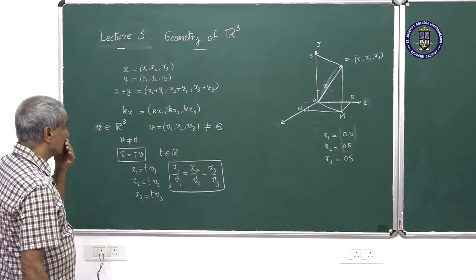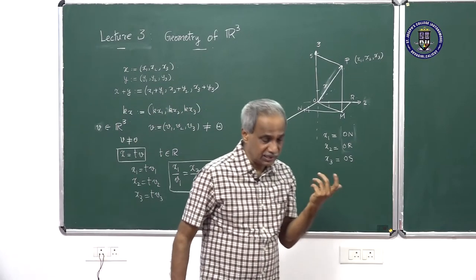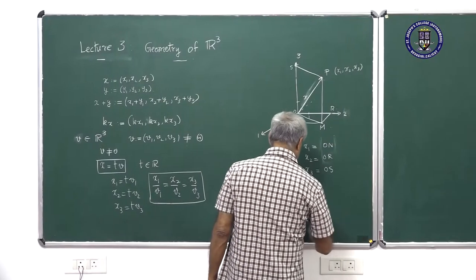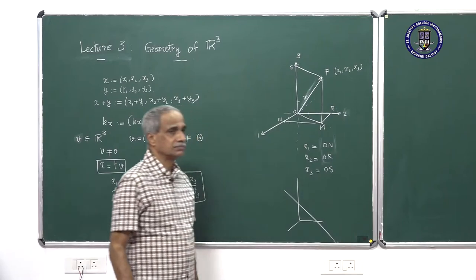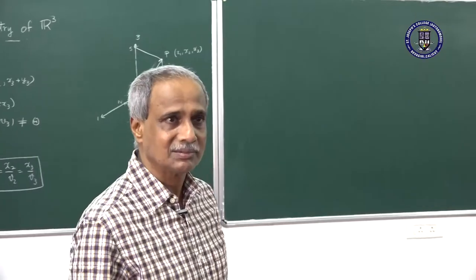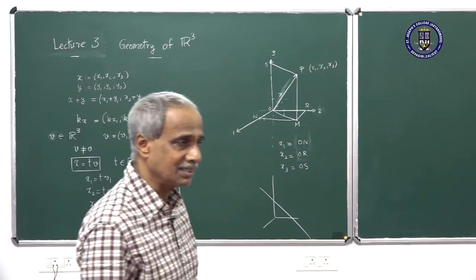What happens to the scenario corresponding to the one we examined in the case of R2? Take any particular line in R3. There exists a unique line parallel to the given line passing through the origin. This comes from the fact that given a line and a point not lying on that line, there exists a unique line parallel to it lying in the plane determined by the line and the given point — the classical geometric result.